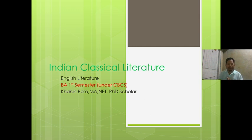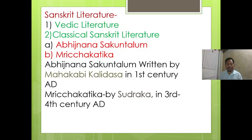Hello viewers, today I'm going to explain about Indian classical literature. Indian classical literature is divided into two types: one is Vedic literature and the other is classical Sanskrit literature. In the syllabus of first semester English Honours, the second type is prescribed, so I would like to explain about classical Sanskrit literature. Two types are prescribed in the syllabus: one is Abhijnanashakuntalam and the other is Mricchakatika.